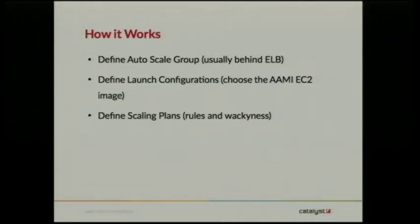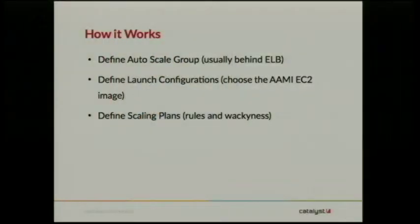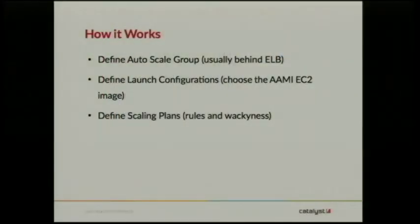In order to get it working, you have to define an autoscale group through the console using the APIs. They're usually sitting behind an ELB, which is a load balancer. You then define some launch configurations — essentially choosing the AMI compute image, which is a snapshot of a machine. In a web server context that would be your web server with your application code ready to go, already configured to talk to your database and maybe your clustered file system. Then you define scaling plans, which are the rules around how you will launch new compute instances.